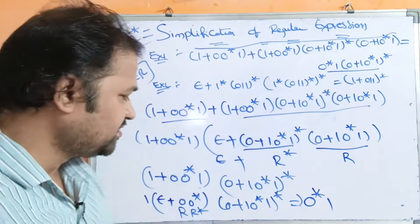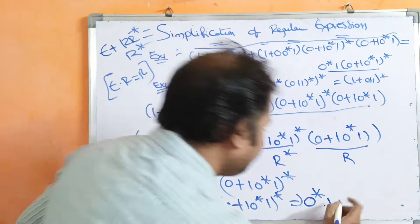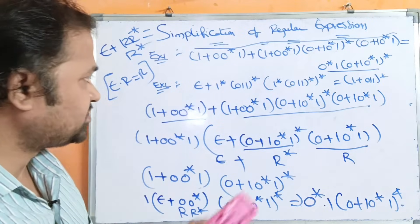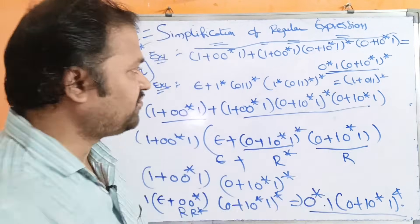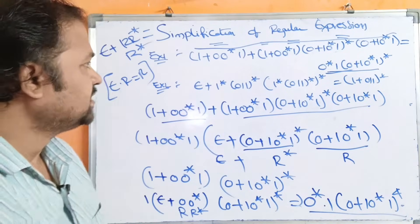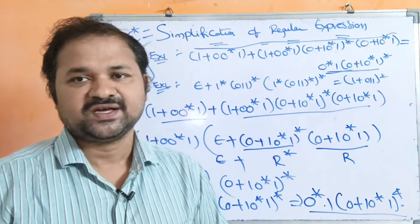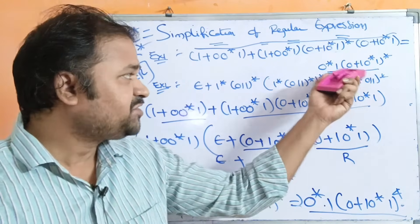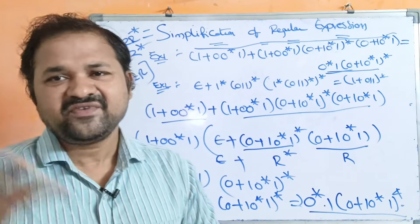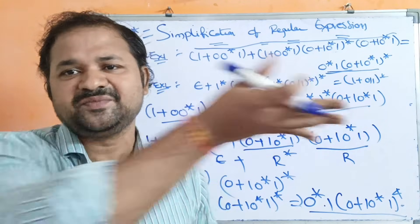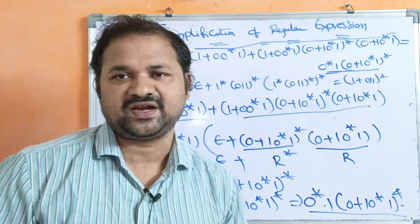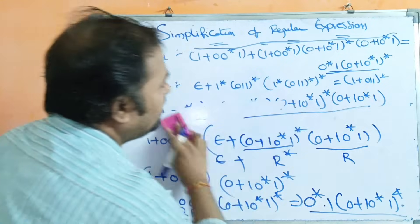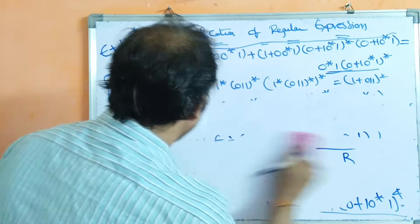So we can write this as 0*1 into (0+1)(0*1)* whole star, which matches the RHS: 0*1 · (0+1)(0*1)*. With this we can conclude that LHS equals RHS. If RHS also contains many terms, we need to simplify RHS as well; if both results match, we say the two regular expressions are equal. We have proved the first example: LHS = RHS.